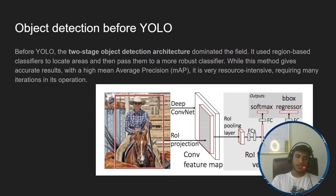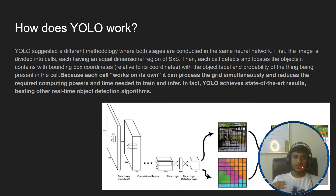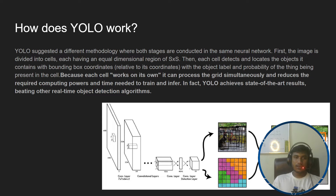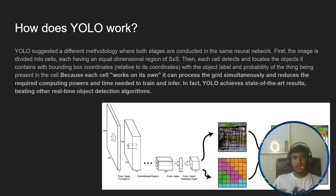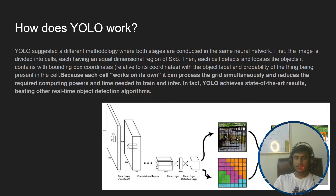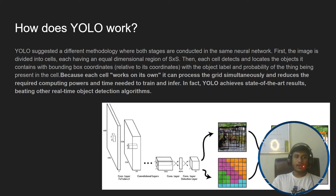When YOLO came into the picture, it suggested a different methodology where both stages are combined in the same neural network. First, the image is divided into cells, each having equal dimensions. Each cell detects and locates the objects it contains with bounding box coordinates. Because each cell works on its own, it can process the grid simultaneously, reducing the required computational power and time needed to train and infer.